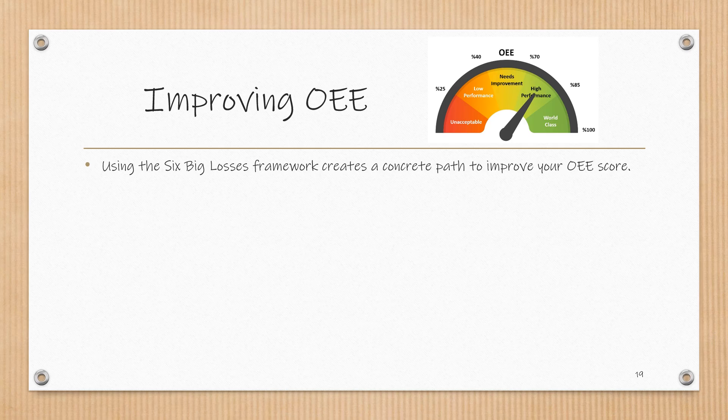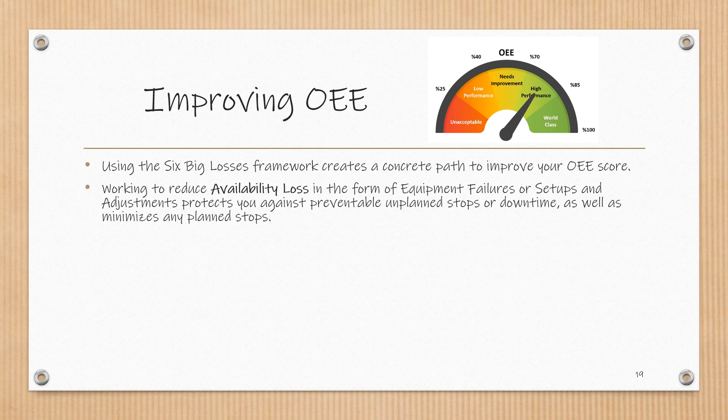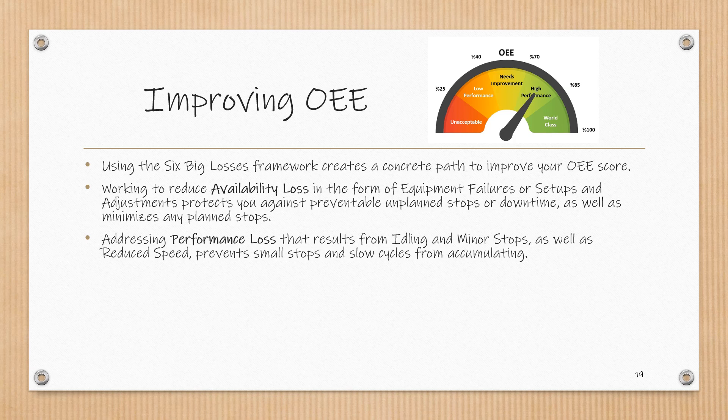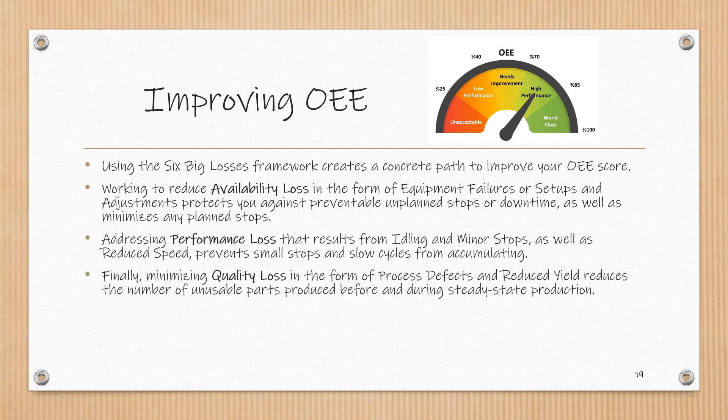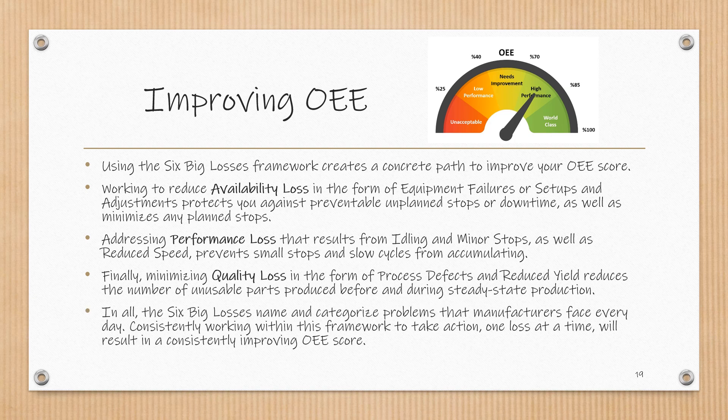Using the six big losses framework creates a concrete path to improve your OEE score. Working to reduce availability loss from equipment failures and setups protects against preventable unplanned stops and minimizes planned stops. Addressing performance loss from idling, minor stops, and reduced speed prevents small stops and slow cycles from accumulating. Finally, minimizing quality loss from process defects and reduced yield reduces the number of unusable parts produced before and during steady state production. Consistently working within this framework, one loss at a time, will result in a consistently improving OEE score.